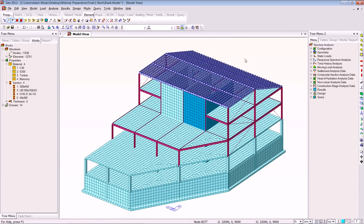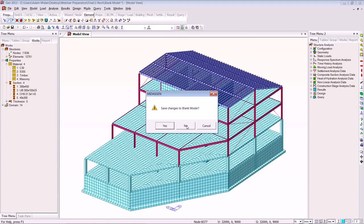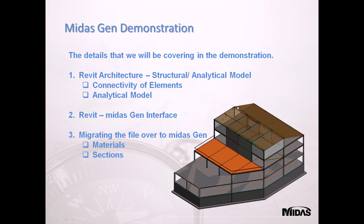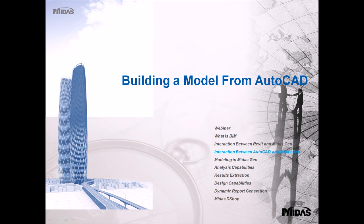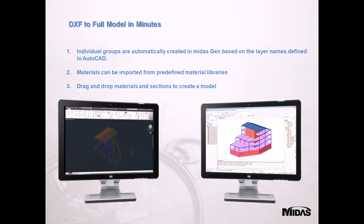I'm going to close that down and take you back into the presentation, and we are going to go through to the DXF file. Now I'll show you how groups are brought across into MIDAS GEN, how simple the drag and drop for materials and sections is. We will now go into MIDAS GEN and quickly take the DXF file in its wire form over into the program.